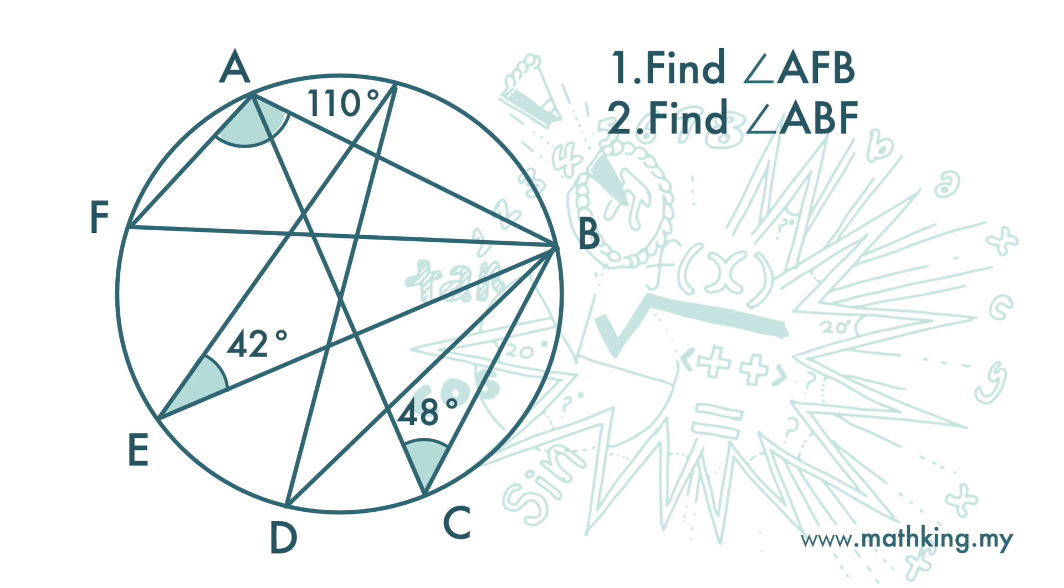Angle at circumference AFB is here. First, we want to find from which arc this angle is subtended from. So it is arc AB. All angles at circumference subtended from arc AB will have the same value.